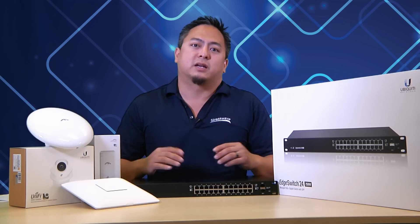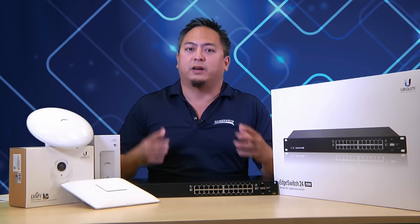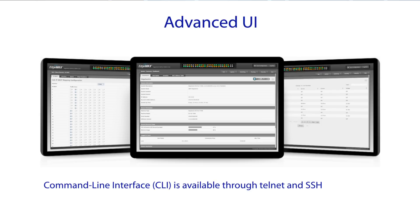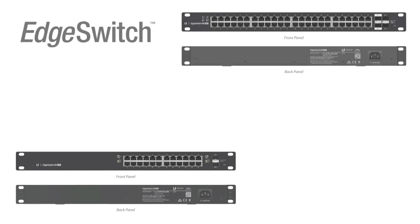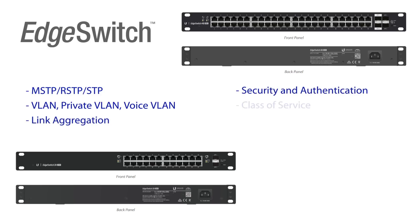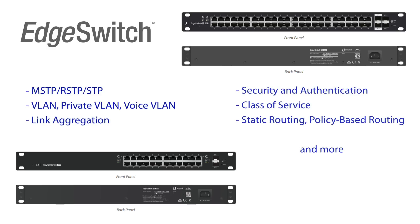These advanced switches come with a very easy to use, very easy to learn graphical user interface. But for those advanced command line interface users, there is also an industry-standard command line available via Telnet or SSH. The Edge Switch comes with almost every single feature you can think of — things like spanning tree, VLANs, link aggregation, security and authentication, class of service, routing, and more.